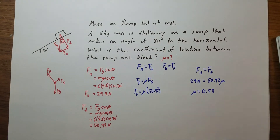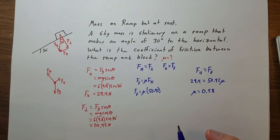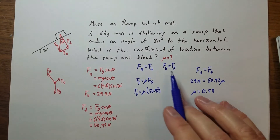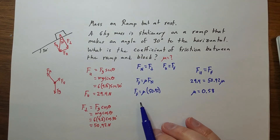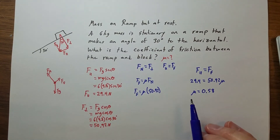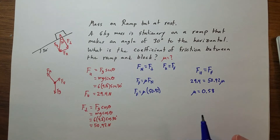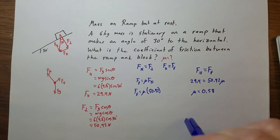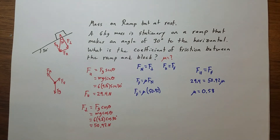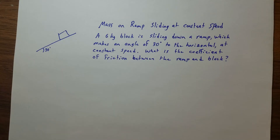There's a neat trick — if you work this out symbolically, it simplifies nicely — but that only works when there's no acceleration, meaning the object is either stationary or sliding at constant speed. Let's look at one of those constant-speed problems next.